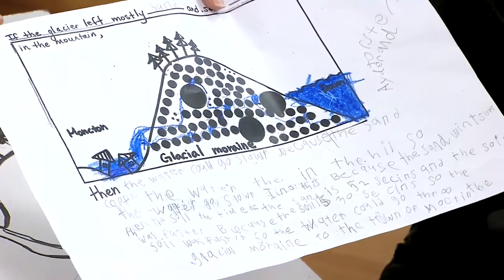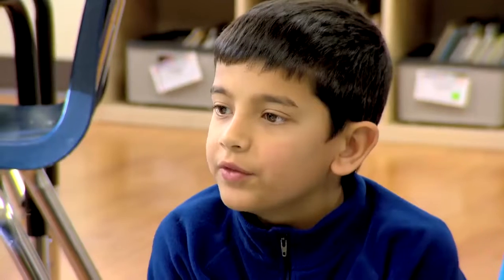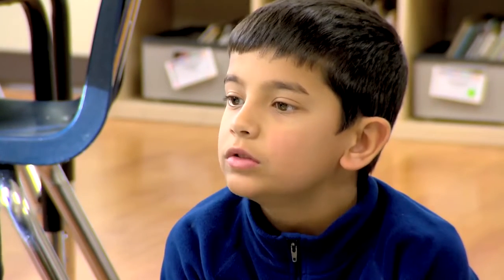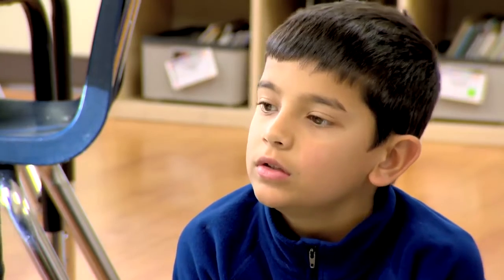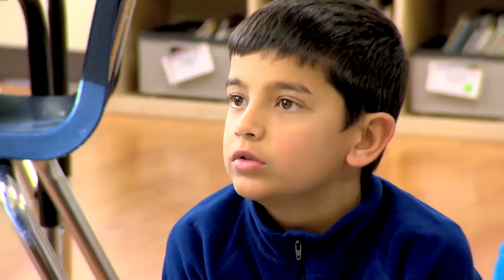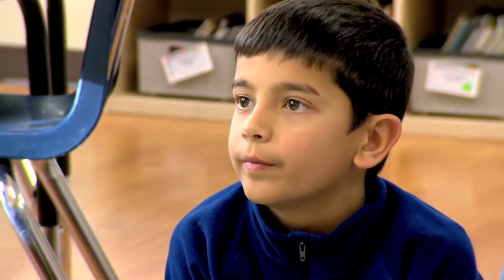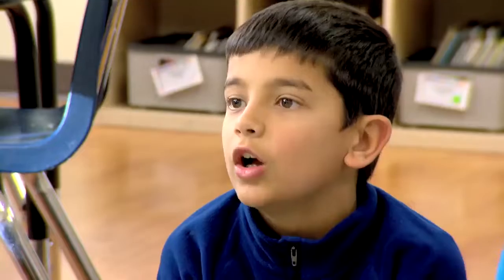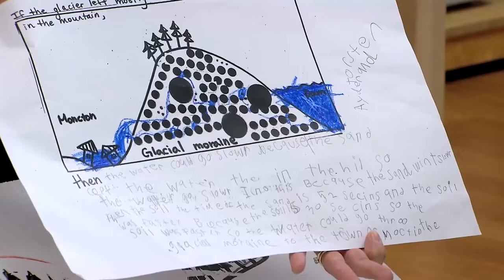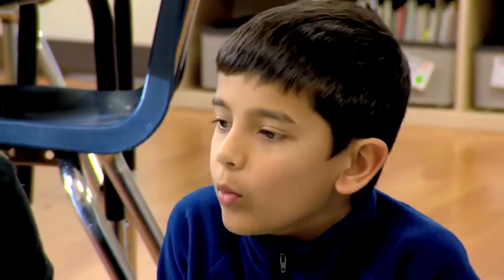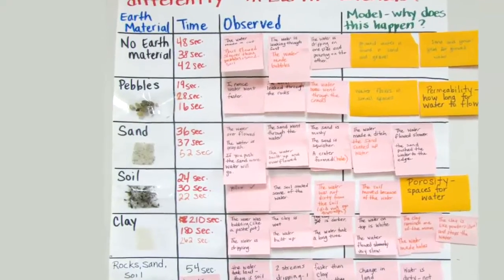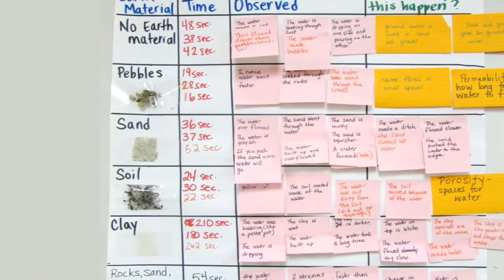I heard that if the glacier was mostly sand and some pebbles in the mountain, then the water would go slower. Do you agree or disagree? I agree, because when we did the experiment with earth materials and used sand, it went slower than soil, like pebbles.